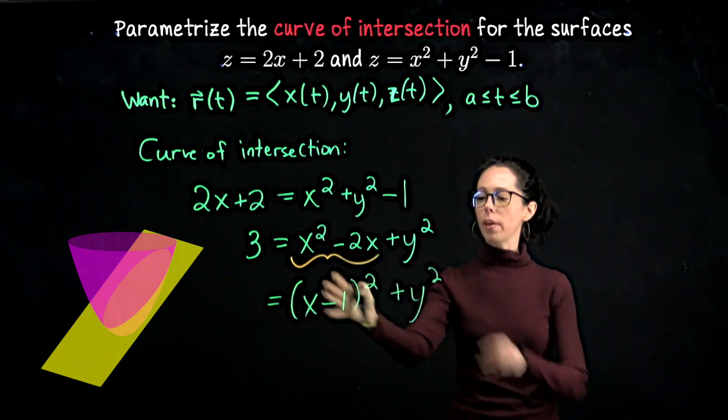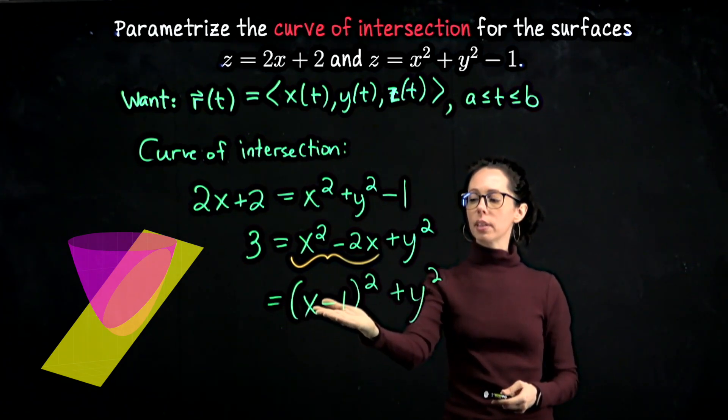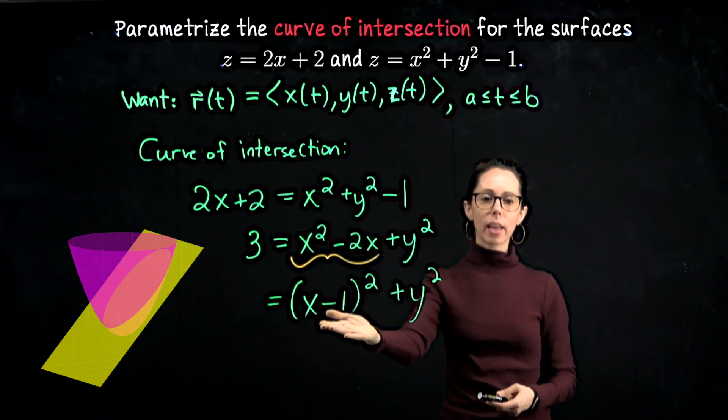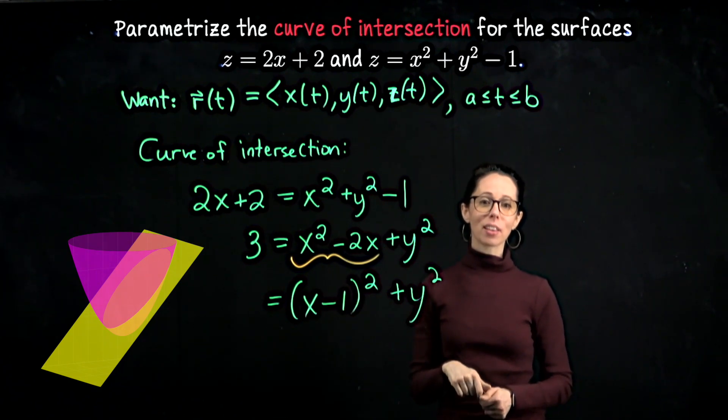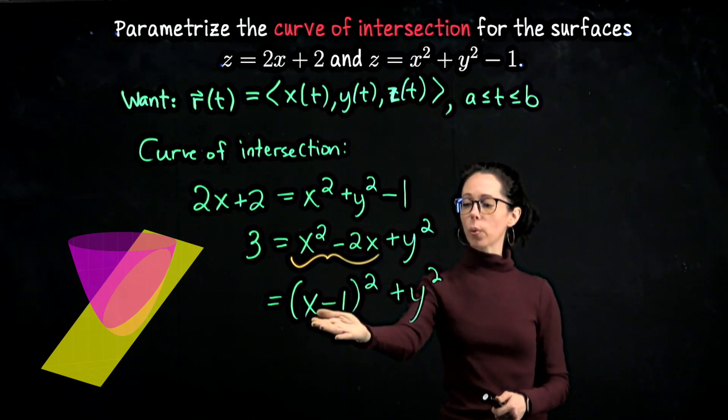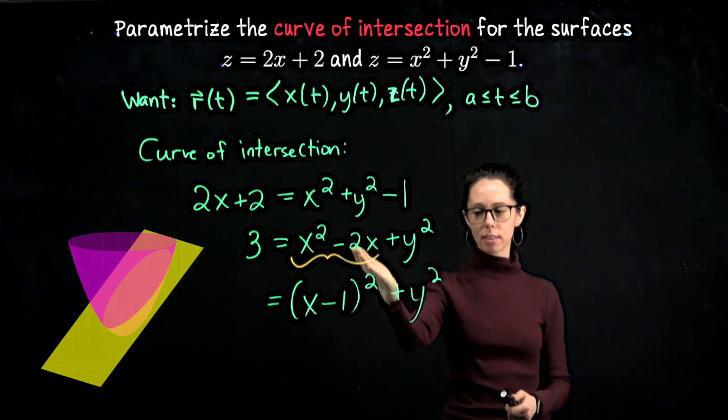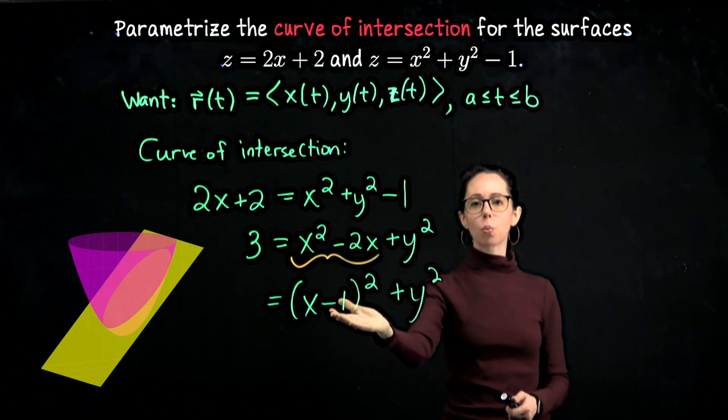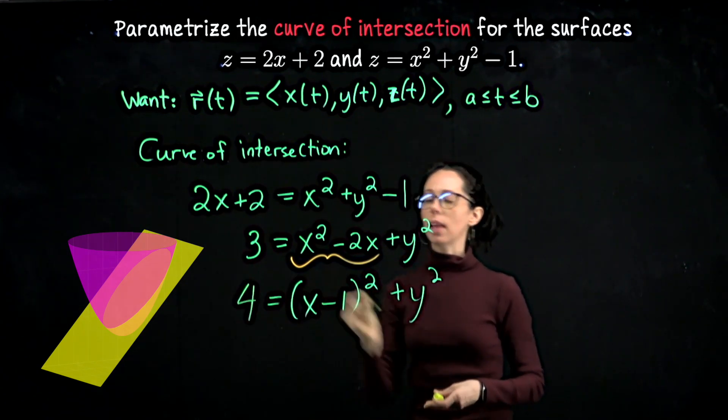So I go ahead and write x minus 1, that quantity squared plus y squared. Then what I want to do is square this out. I'm going to do it out loud and see how I change the right-hand side. I need to enact the same changes on the left-hand side. So were I to square this, I would get x squared, that's here. Minus x minus x is this minus 2x, but then I get also a plus 1. That's new on the right-hand side, so we need to add 1 to the left-hand side.